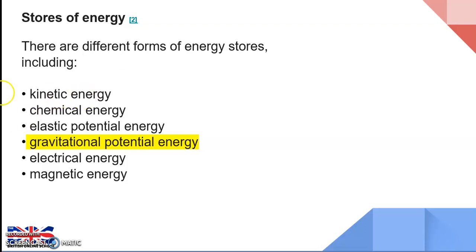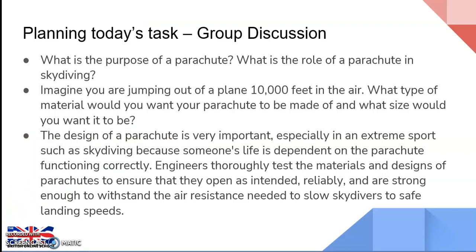We've also previously met electrical energy — understanding how the flow of electrons within a conductive substance is a form of energy that can be useful and changed into many other forms. We'll also look later at magnetic energy. In today's task we're going to explore how gravitational potential energy can be converted into kinetic energy and other forms of energy.